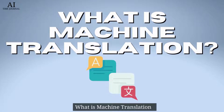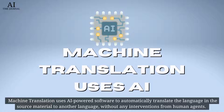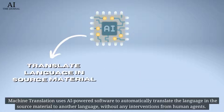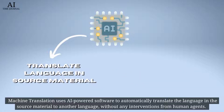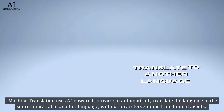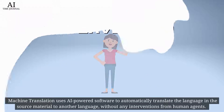What is machine translation? Machine translation uses AI-powered software to automatically translate the language in the source material to another language, without any interventions from human agents.